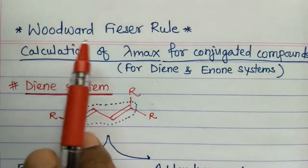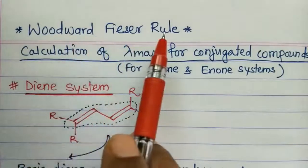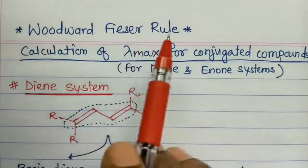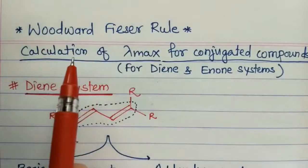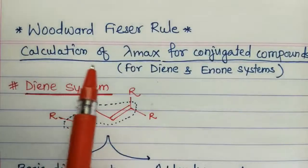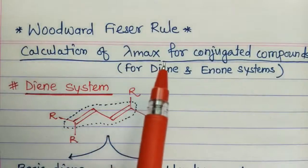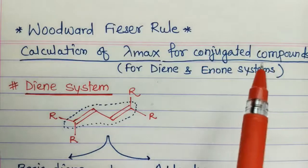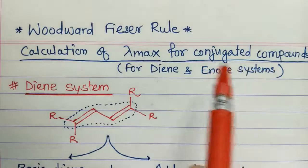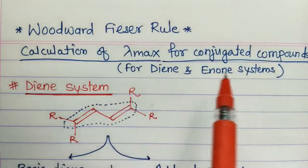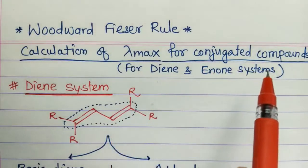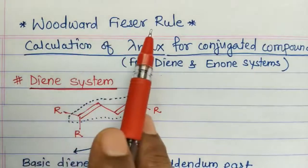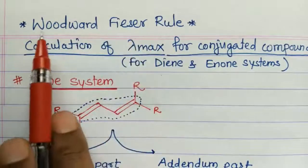Today's topic is the Woodward-Fieser rule. The Woodward-Fieser rule is applicable for the calculation of lambda max of conjugated systems or conjugated compounds, such as diene or enone systems.